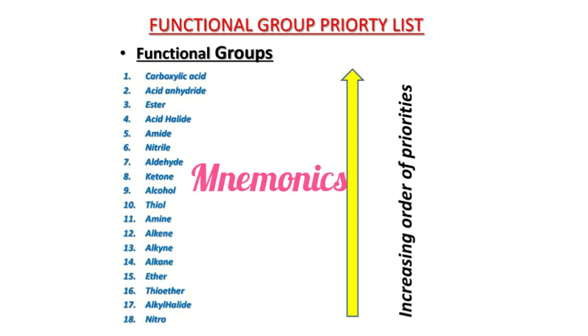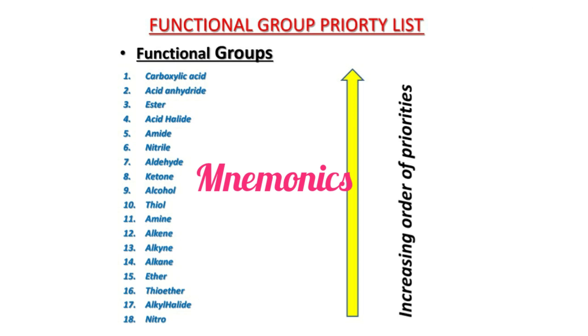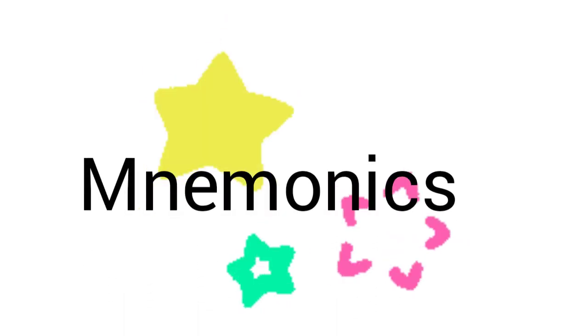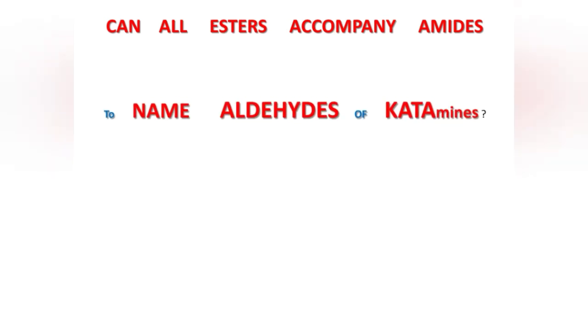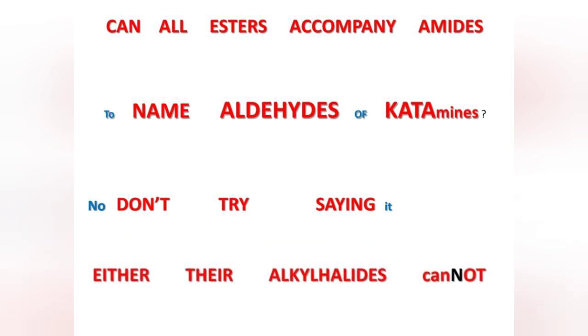Before we move to the mnemonics, you need to acquaint yourself with the functional groups in the table, so that when you see a letter, you know what functional group it corresponds to — for example, 'C' corresponds to carboxylic acid. So familiarize yourself with the functional groups in this table. Now let's begin with the mnemonic. It goes like this: 'Can all esters accompany amides to name aldehydes of ketamines? No, don't try saying it either — the alcohol he likes cannot.'